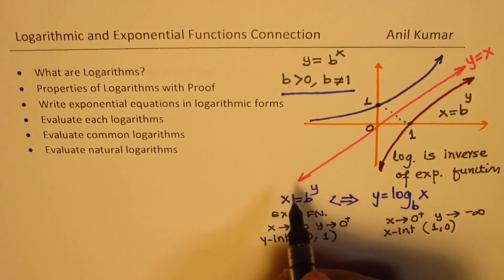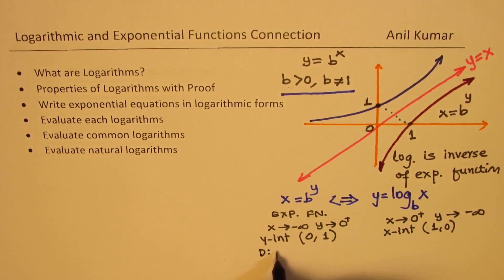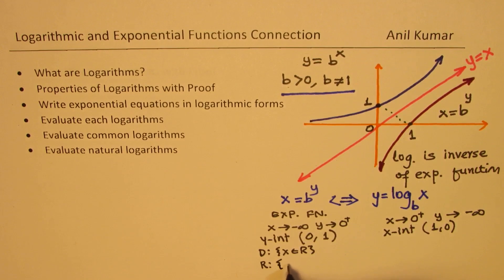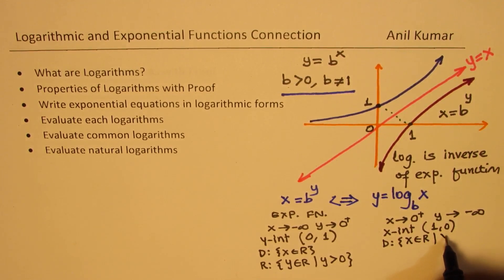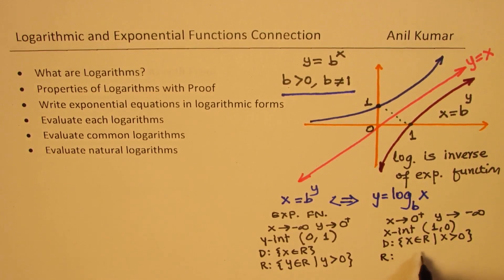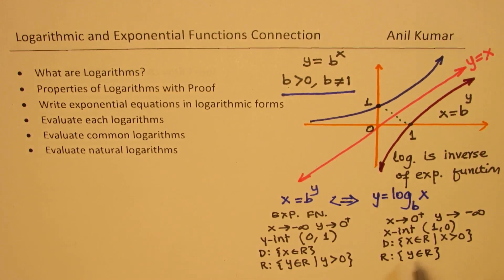As far as domain and range are concerned, for the exponential function the domain is all real numbers and the range is y greater than 0. For the logarithmic function it flips: the domain requires x greater than 0, and the range is all real numbers — there is no restriction on the range of logarithmic functions.